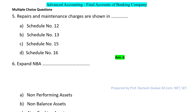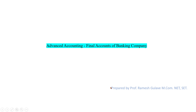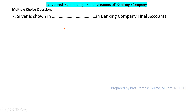NBA stands for Non-Banking Assets, so option C is the right answer. Students should note that NBA stands for Non-Banking Asset, not non-balance asset or any other variation.